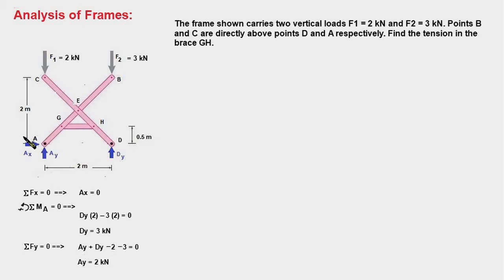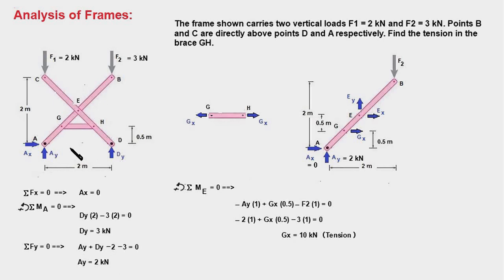The next step is to dismember the entire frame and draw FBDs of all the members. We draw the FBD of the two-force member first, followed by the multi-force member AGEB. We haven't drawn the FBD of member CED yet — that will be explained in a moment.